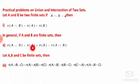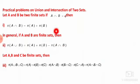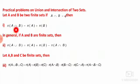When A and B are disjoint sets — that is, their intersection is empty — the formula simplifies to N of A union B equals N of A plus N of B, because the N of A intersection B term is zero.